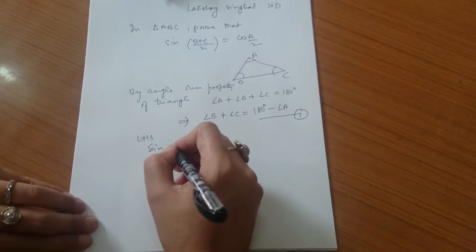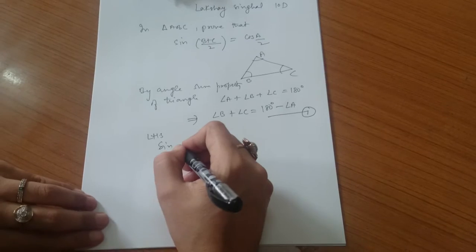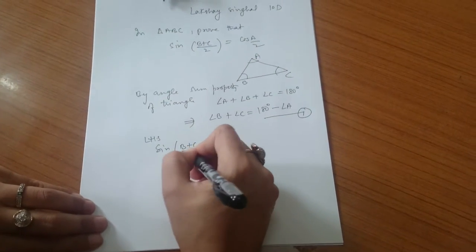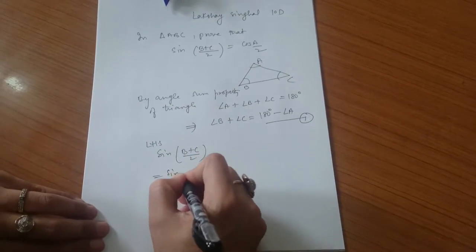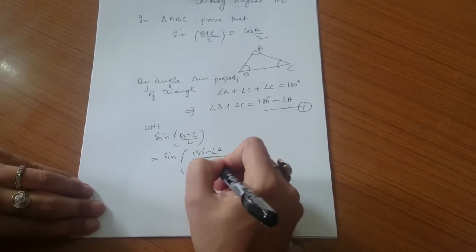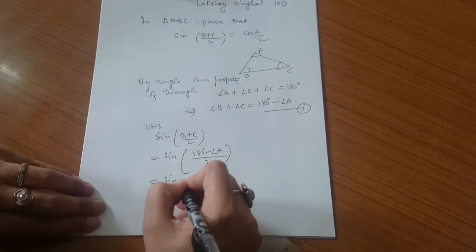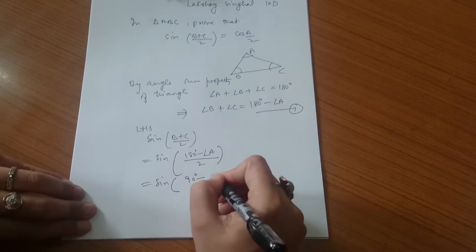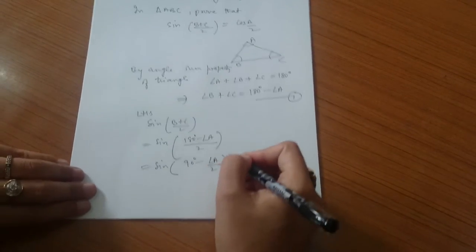We have to show sin(B+C)/2 is cos(A/2). So, the left-hand side is sin(B+C)/2, which will be equal to sin(180° - A)/2. This equals sin(90° - A/2).